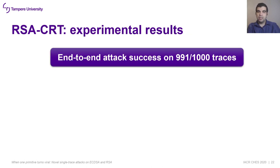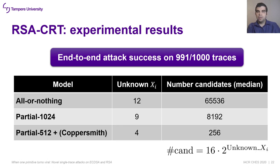We launched the RSA attack 1,000 times, obtaining a success rate of 99%, confirming the attack is very feasible. A comparison table shows the number of candidates for P under different leakage models. The all-or-nothing model requires gathering the full execution flow, maximizing unknown XI but keeping the number of candidates practical. The partial model can be used for both full and half-prime recoveries, minimizing the number of unknown XI. For side-channel signals with higher noise, the difference between models plays a crucial role.